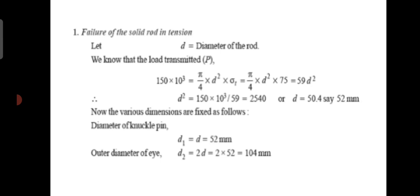Failure of the solid rod in tension. First, we assume small d equals the diameter of the rod. We know that the load transmitted P equals (π/4) × d² × sigma T. Substituting P equal to 150 × 10³ and sigma T equal to 75, we get d equal to 50.4, so we say d equal to 52 mm.